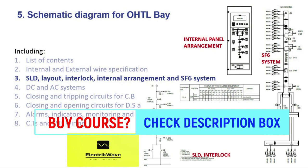Here we will understand the single line diagram, which represents various bay sequences like line bay, transformer bay, bus coupler bay, etc. It also covers interlock requirements between circuit breaker, disconnector, earth switch, etc., and the SF6 compartment arrangement between various equipments of GIS.